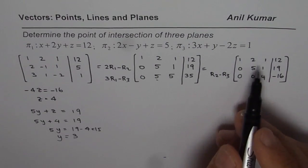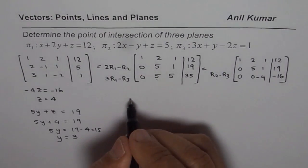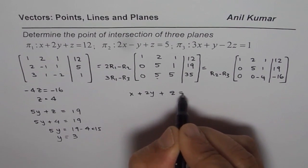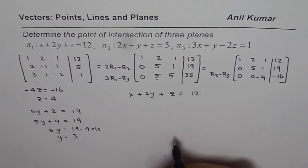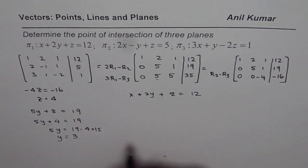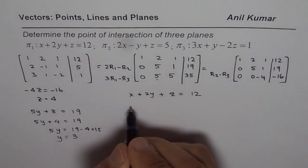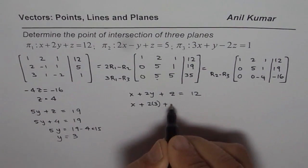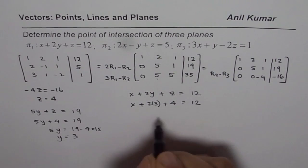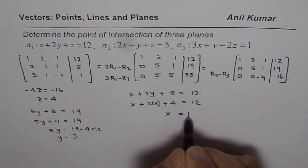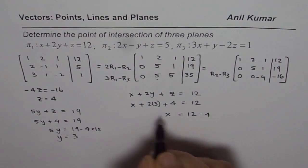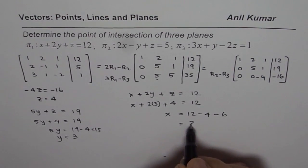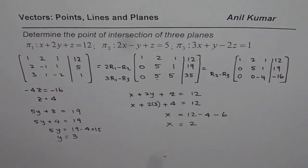Now we will use the first equation, which could be written as x + 2y + z = 12. So in this equation, we will substitute the values of y and z. So we have x + 2 times 3 plus z is 4 equals to 12. So we have x = 12 - 4, 3 times 2 is 6 minus 6. So that is -10. So we get x as equals to 2.